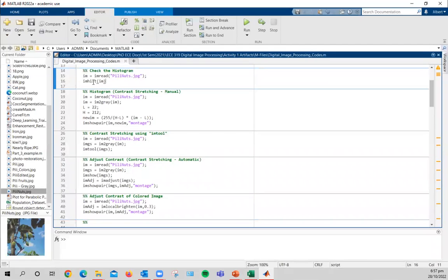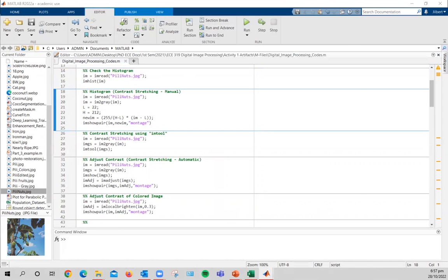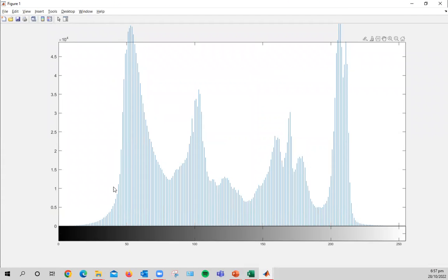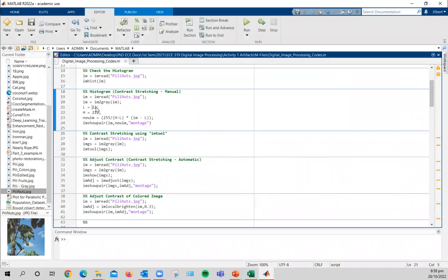So this is the iamhist wherein we can extract the values for the L and the H. Let's run this code. And as you can see, this is like a histogram. Actually, this is a histogram where we can definitely find for the lowest and the highest pixel value. This is the highest pixel value approaching 255. And this is the lowest lower pixel value from zero. So in our estimate from our code, we got the L to be 22 and H to be 212.